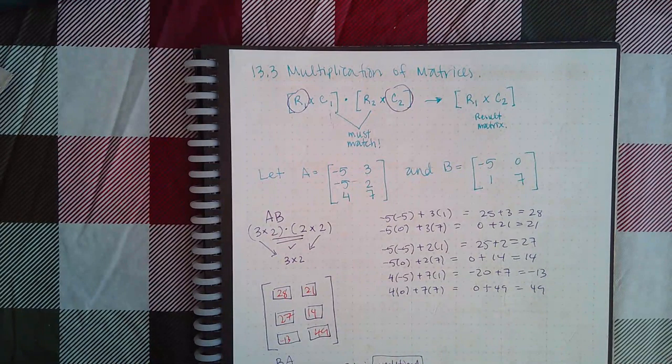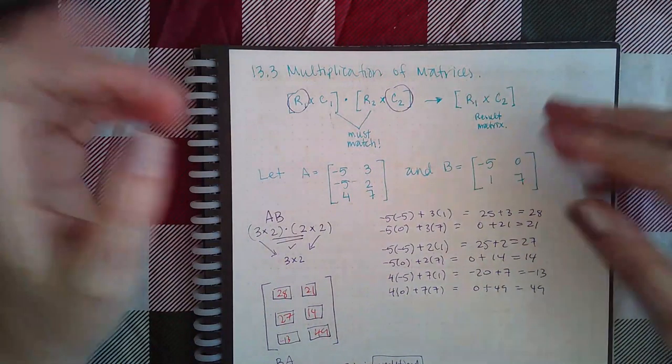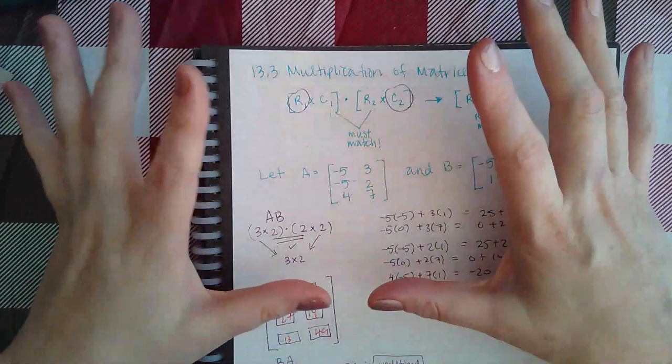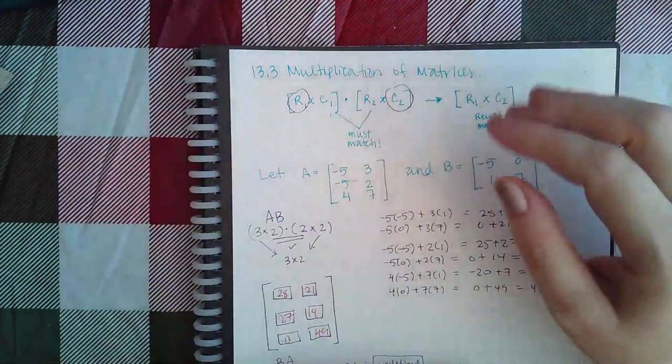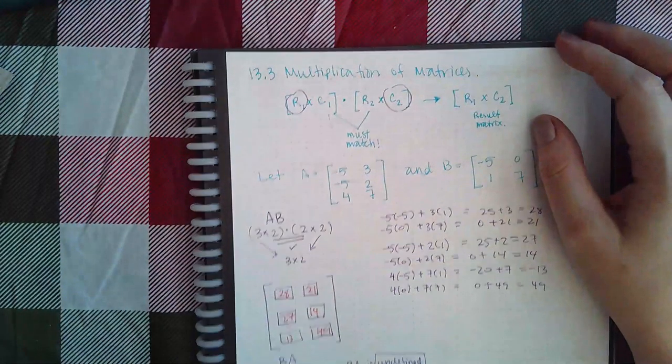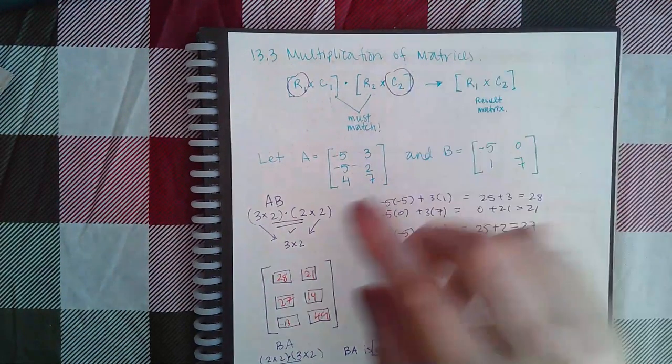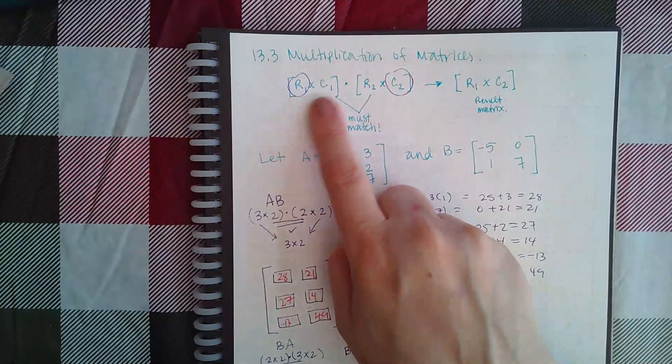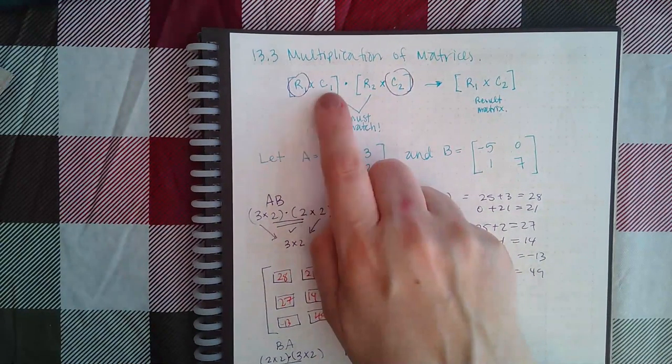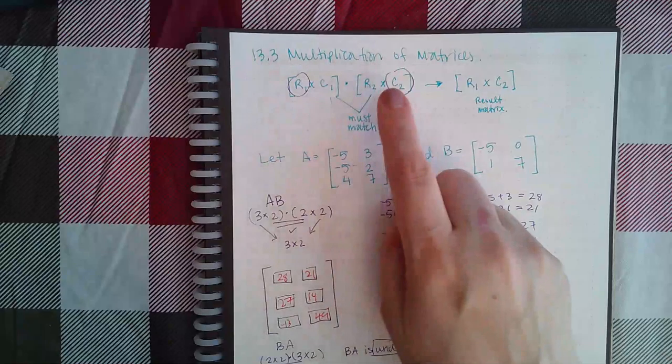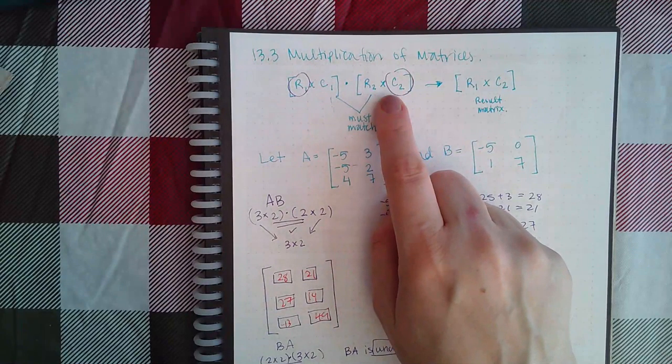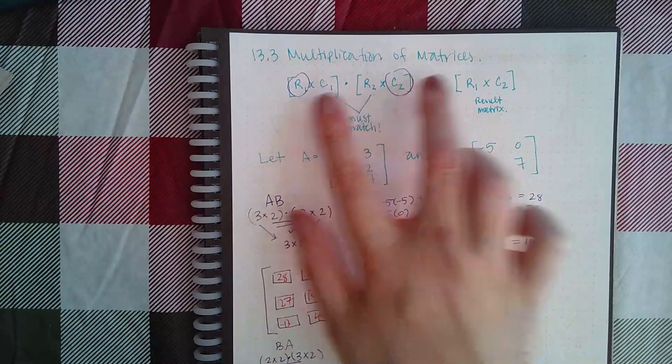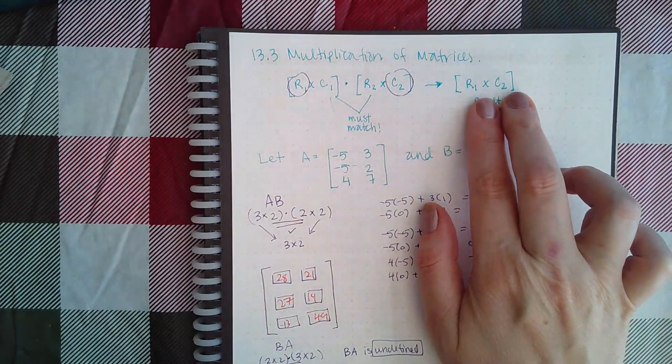Here we have multiplication of matrices. Just to reiterate, like with the two-by-two matrices, whatever order they want the multiplication in, you do have to make sure that you put the first matrix's dimensions in the front and then the second matrix's dimensions in the back. The two in the middle must match. The two on the ends tell you what your resulting matrix will look like.